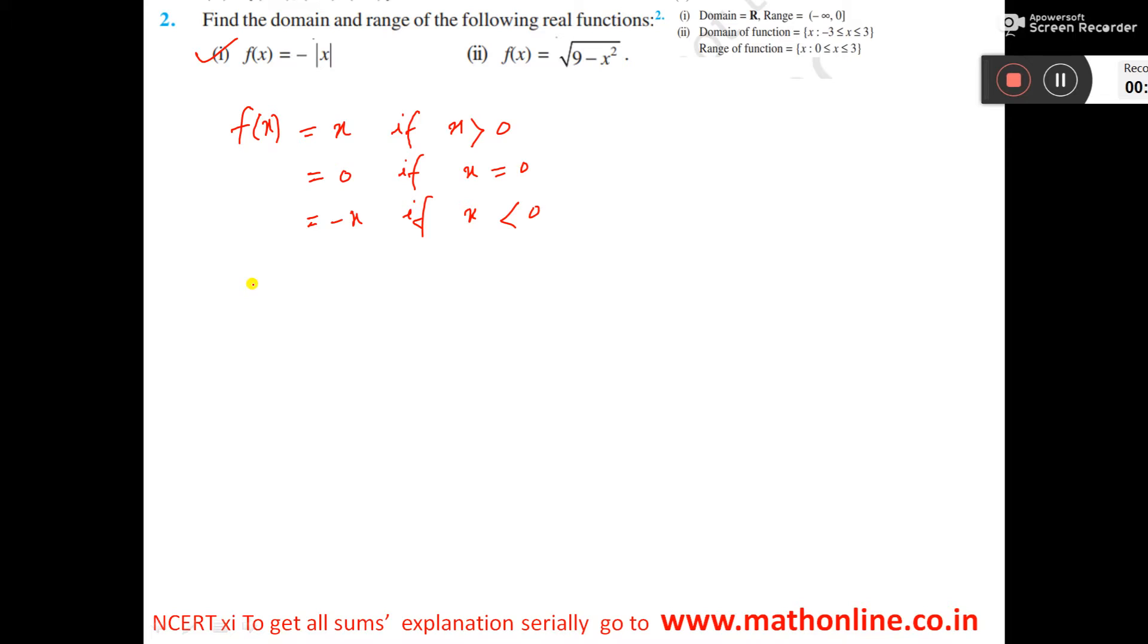Here we have f(x) = -|x|. Since f(x) equals minus mod x, all the signs will be changed. So f(x) = -x if x > 0, equals 0 if x = 0, and equals x if x < 0.